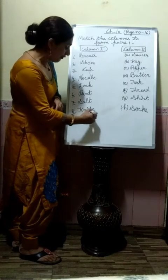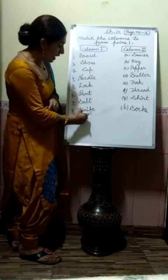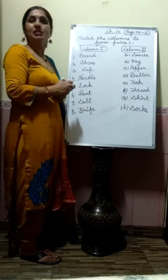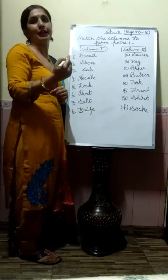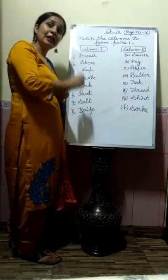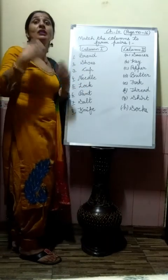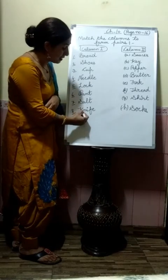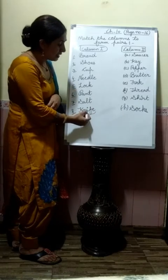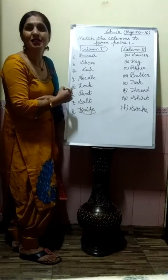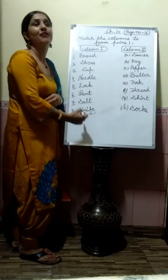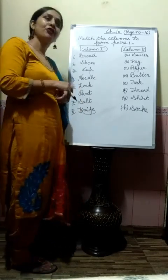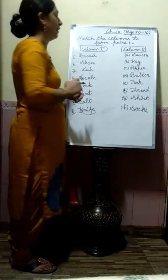Now, many children will read this as 'knife' with a K sound, but the K is silent here. When we pronounce it, the K sound will not come. We start from N. The pronunciation is 'knife.' Knife means chaku — the tool we use to cut vegetables and fruits.